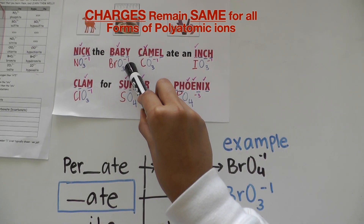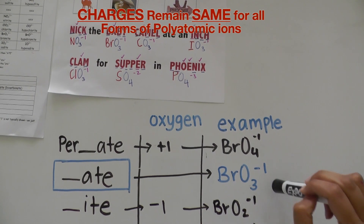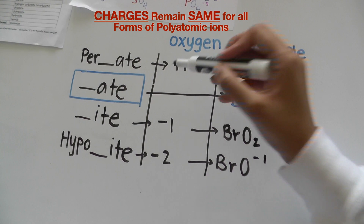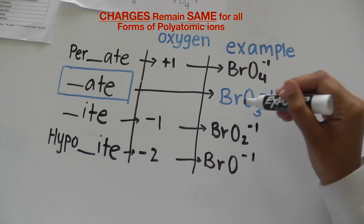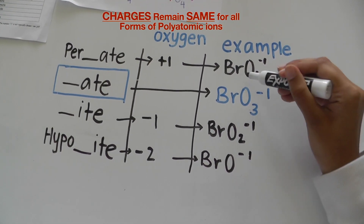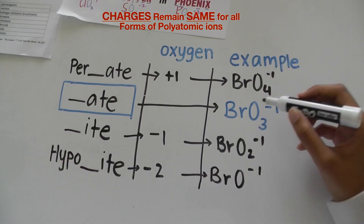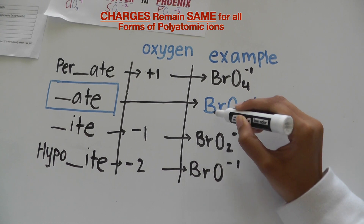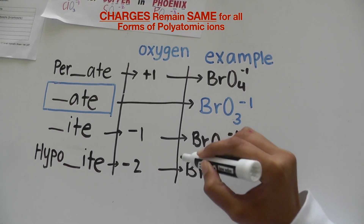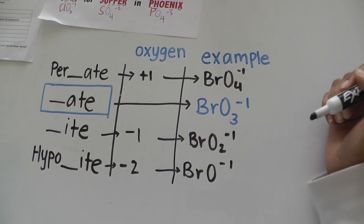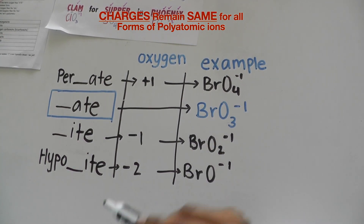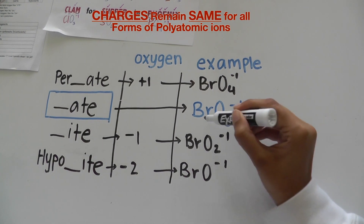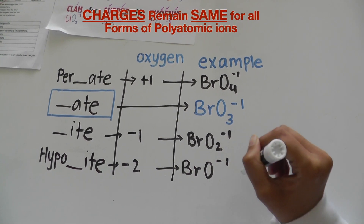Let's pick an example: Bromate, BrO3-1. To convert Bromate into Perbromate, all we have to do is add 1 oxygen, making BrO3-1 into BrO4-1. To make Bromate into Bromite, all we have to do is subtract 1 oxygen, making BrO3-1 into BrO2-1. And lastly, to make Bromate into Hypobromite, we have to subtract 2 oxygens, making BrO3-1 into BrO1-1.